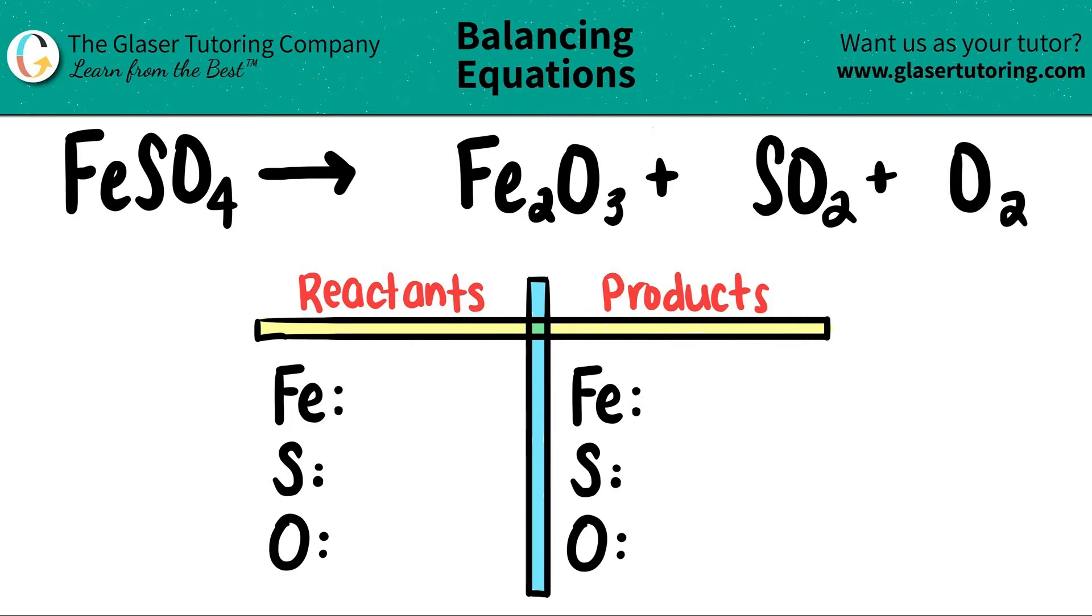So let's just start numbering how many we have, and then we will get to balancing. Let's start with the left-hand side. For iron, I don't see any subscripts, so that just means that I have one of them. The same thing goes for the sulfur. There's one sulfur. And then for the oxygen, there's a four next door, which means that there's four oxygen.